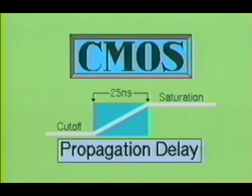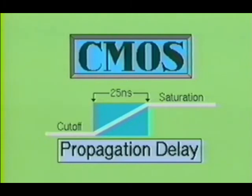As mentioned earlier, there is a trade-off between switching speed and power dissipation in all logic gates, and the CMOS device is no exception. The switching speed of the CMOS gate is typically 25 nanoseconds, making this device much slower than its TTL counterpart. Presently, the TTL and CMOS logic families dominate the small-scale and medium-scale integrated digital circuits.